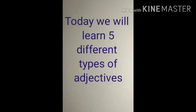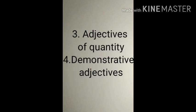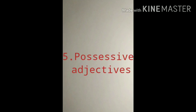We will learn 5 different types of adjectives that are given in your grammar books. First is adjectives of quality. Second is adjective of number. The third one is adjective of quantity. The fourth one is demonstrative adjective. The fifth one is possessive adjectives.